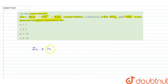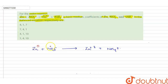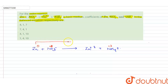Here the oxidation state of zinc in its isolated state is 0. On nitrogen in NO3⁻ the oxidation state is +5. Here the oxidation state of nitrogen in NH4⁺ is −3, because nitrogen is more electronegative than hydrogen.